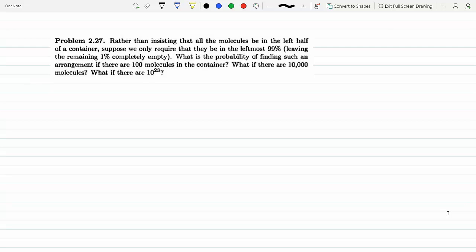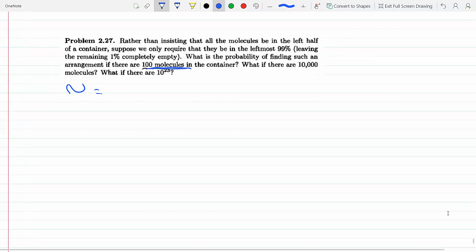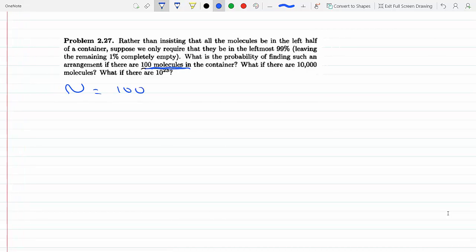If there are 100 molecules in the container, let's start with N equals 100 molecules. We know that the multiplicity is given in your book by Equation 4 for an ideal gas.